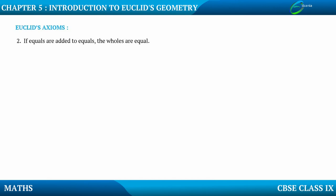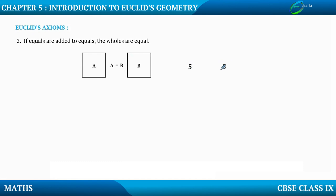Next axiom: if equals are added to equals, the wholes are equal. Let us consider two equal quantities. This part A and this part B are equal to each other. For example, 5 is equal to 5 — any number is equal to itself. Here, this shape A and this shape B are equal.